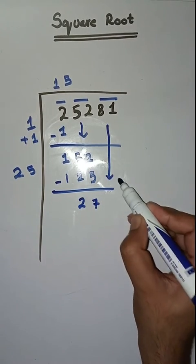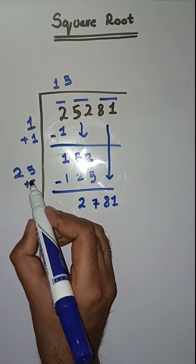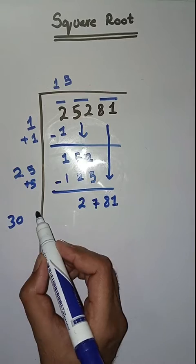Next pair is 81. We will bring it down. Here we will do 25 plus 5 which is equal to 30. So we will take a number 9.